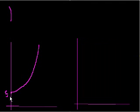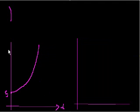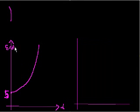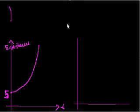Let's say we start at 5 feet, and then we move forward from there. And this axis is, of course, time. This axis is the s, or distance, axis. Actually, I just looked at the clock — I'm running out of time, so let me continue this in the next presentation.